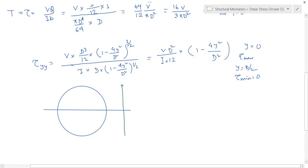At y equals D/2, this minimum is equal to 0. As y becomes nearer to the neutral axis, it is maximum, and then again reduced to 0 here.